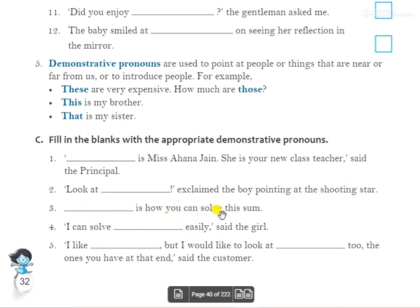Third: 'Dash is how you can solve this.' Since it is singular and nearby, the answer is 'This'. 'This is how you can solve this.' We write it in our copy — it is near, so we use 'this'.